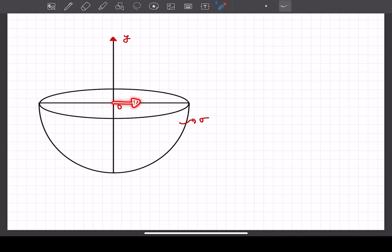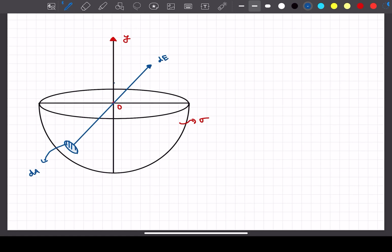Which means there is only one possibility: the horizontal electric field component must be zero and only the vertical component must remain. Now let's say we take a small patch of area dA on the surface of the hemisphere. Then the electric field due to this patch would be in this direction and let's say its magnitude is some dE.